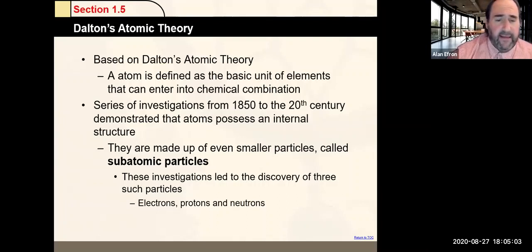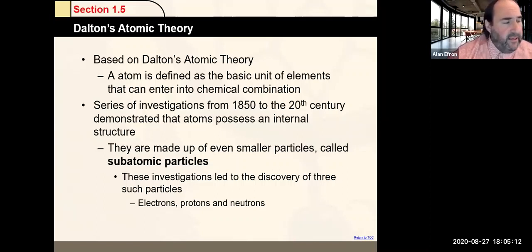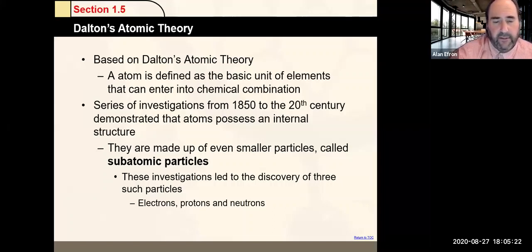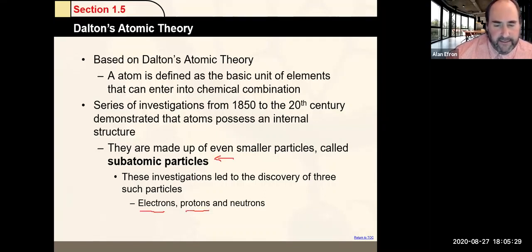Experiments from 1850 to about the 20th century helped demonstrate that although atoms are super small, they still contain even smaller particles — subatomic particles. Three subatomic particles are electrons, protons, and neutrons.